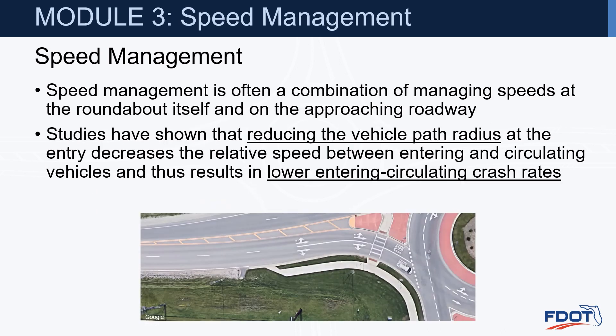Speed management is often a combination of managing speeds at the roundabout itself and on the approaching roadway. Studies have shown that reducing the vehicle path radius at the entry decreases the relative speed between entering and circulating vehicles and results in lower entering-circulating crash rates. What's shown here in yellow is the area where we want to have the speed reduced — that's our R1 — which is where the pedestrian crosswalk is, as well as the yield line, just prior to the entering-circulating conflict.